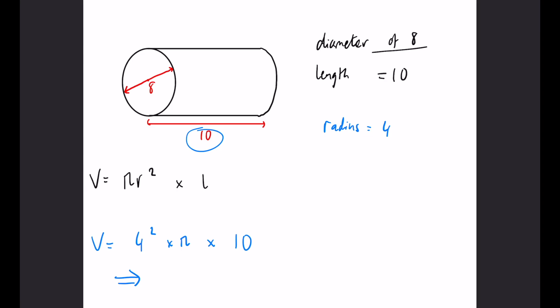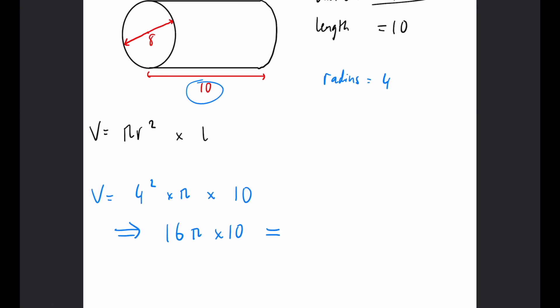Now, 4² is 16, so 16π if we were to write it in terms of π. And 16π times 10 is just going to be 160π.